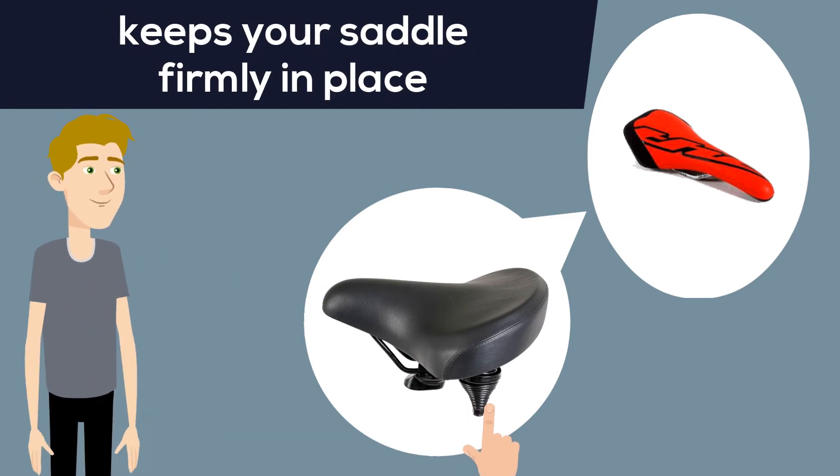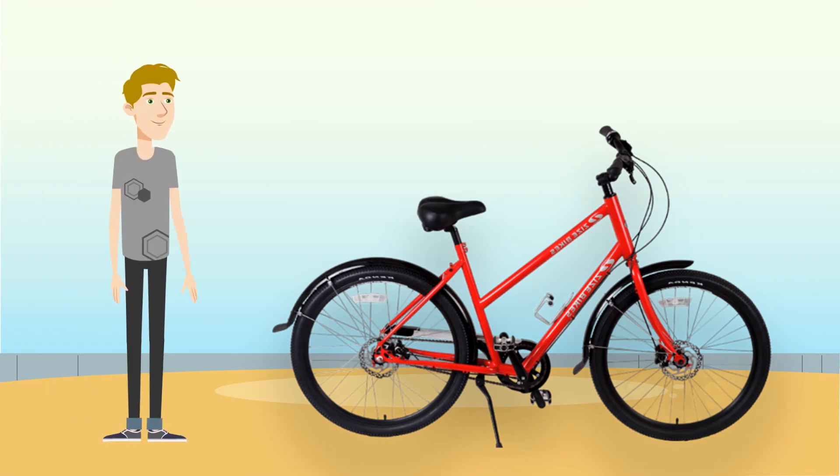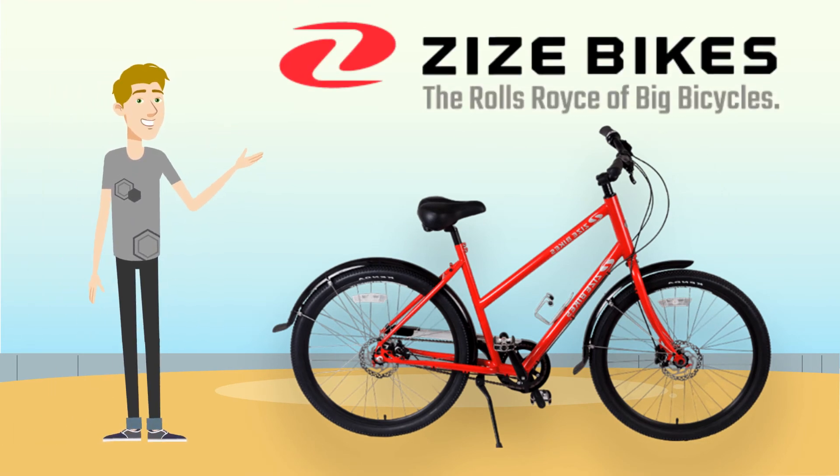Our double-bolted seat post clamp keeps your saddle firmly in place. Go ahead, you know you want to ride. Order your Zeiss bike today.